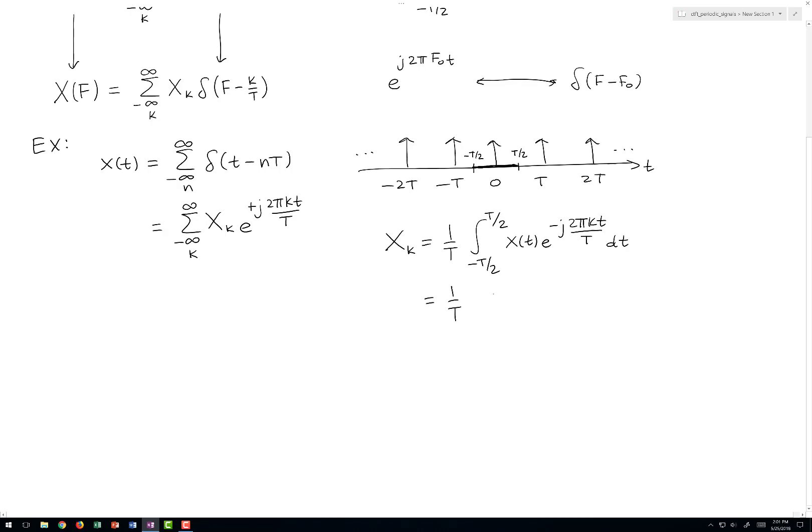So if we substitute that in, we see that this whole integral is just equal to 1. And so the Fourier series coefficients are all equal to just 1 over T.